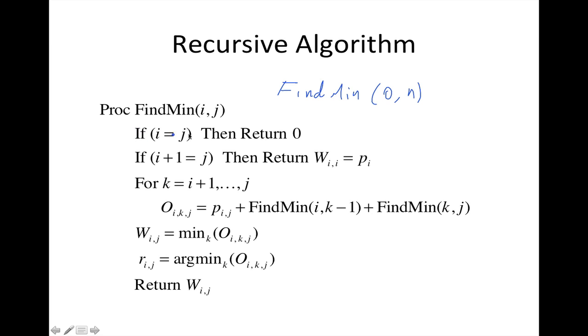We have here the base conditions. If i equals j, that's empty, so we return zero. If i+1 equals j, then we return pi, which is just the single element.